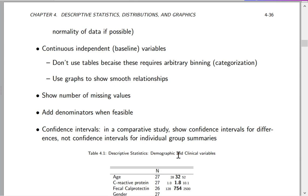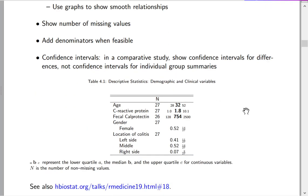Also show the number of missing values and denominators. A very common mistake in comparative studies such as randomized trials is that the wrong confidence intervals are shown. A randomized study does not take a random sample of the population, so there's no real population inference for the mean outcome for those on treatment A. A randomized trial is only designed to provide valid estimates of differences between treatments, so the only confidence interval you should show is the confidence interval for the difference across treatments.